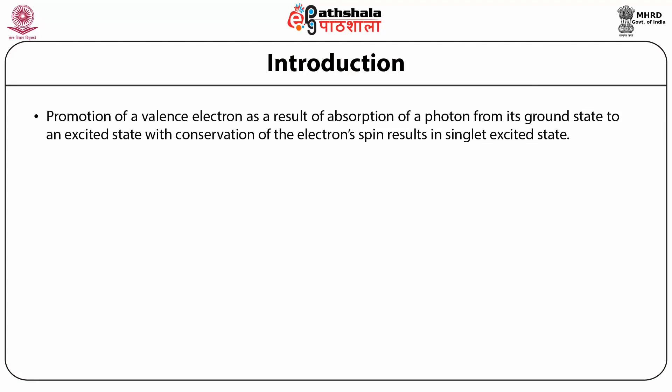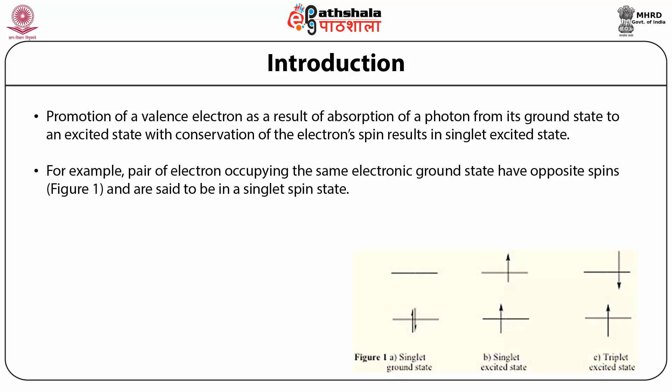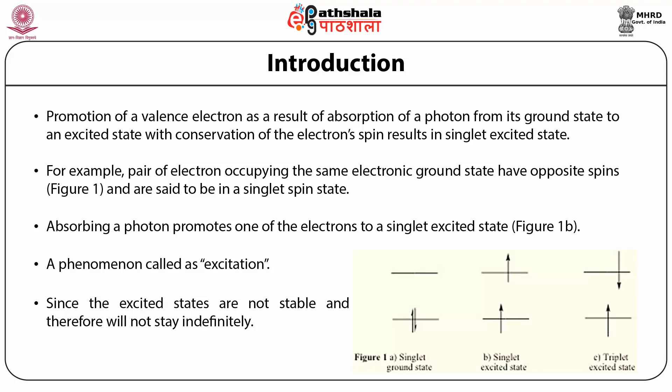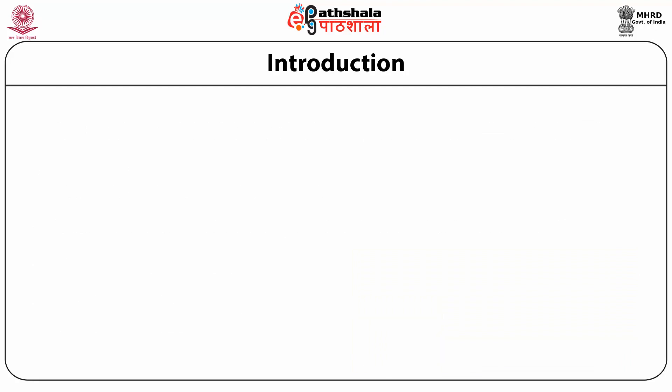Promotion of paired electrons as a result of absorption of a photon from ground state to an excited state, with conservation of electron spin, results in a singlet excited state. When an electron is excited and the spin does not change, a pair of electrons occupying the same ground state have opposite spins and are said to be in a singlet spin state. Absorbing a photon promotes one electron to a singlet excited state — a phenomenon called excitation. Since excited states are not stable, when the excited electron does not change spin, the state is called the excited singlet state.